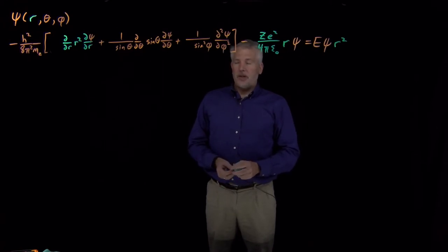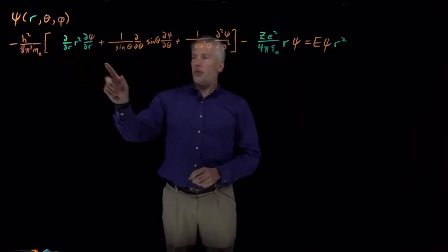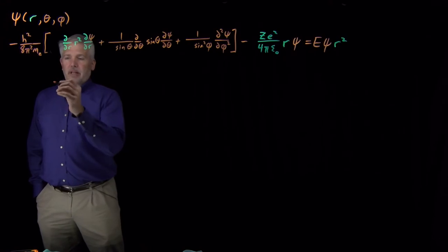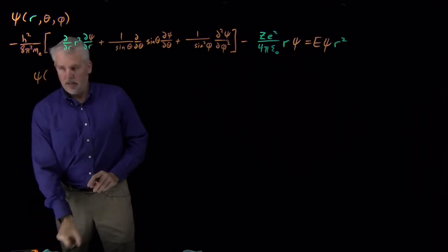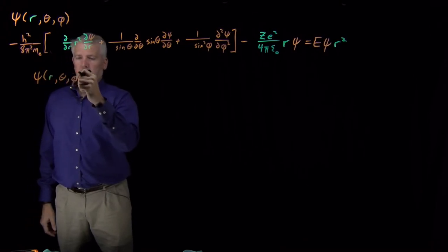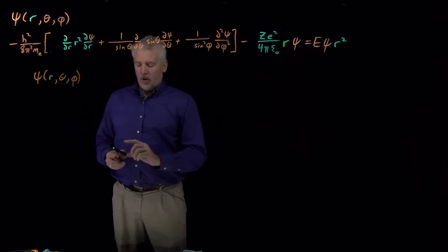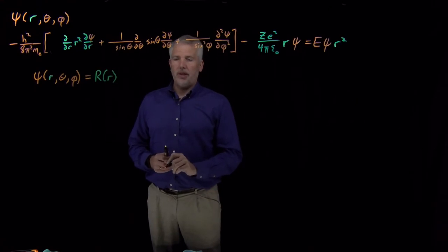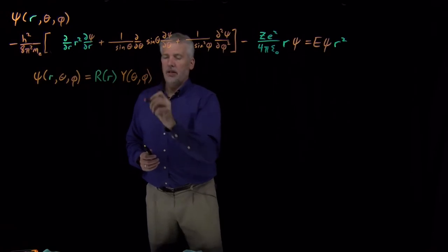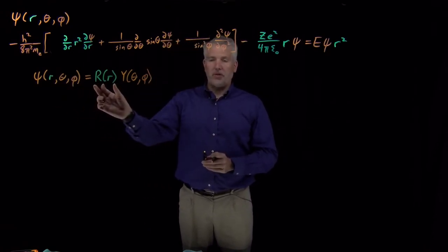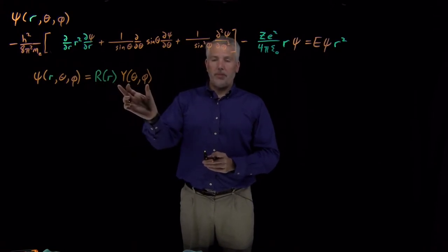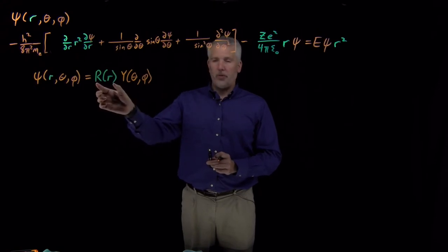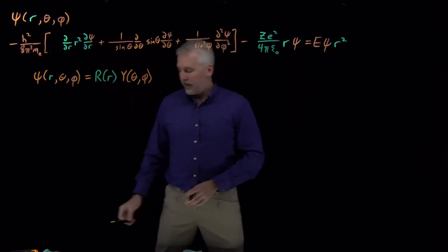The only thing not completely separable so far is the wave function itself — everywhere it appears, it depends on both radial and angular coordinates. To get around that, we hypothesize that the wave function can be written as a product: one function that depends purely on radial coordinates, R(r), multiplied by another function that depends on angular coordinates, Y(θ,φ). This product form will allow us to separate the variables.